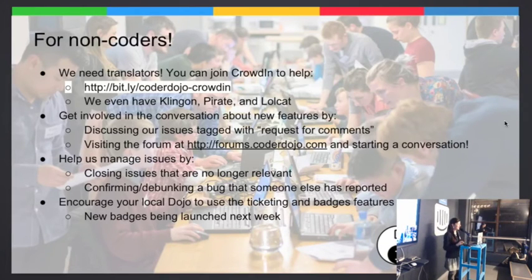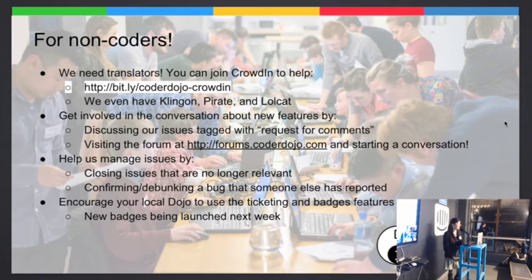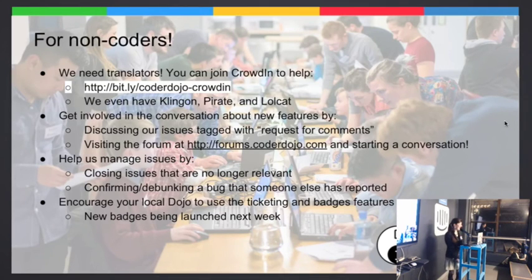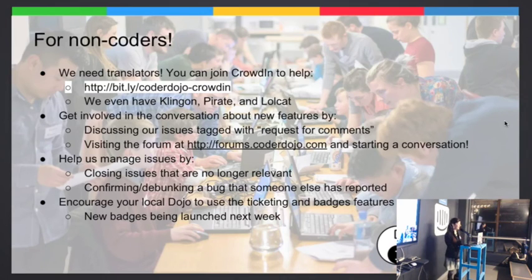You don't have to be a coder to help out. Like I was mentioning with Crowdin, you can help to translate — we still have quite a few languages to go. We only just got started in Irish this week, so we could definitely do with some help there. We also have Klingon, pirate, and lolcat — it would just be funny for the kids. You can also get involved in the conversation on GitHub — there's an issue label called 'request for comments' for issues where I'm not really sure if we want to do them yet or I'd like a second opinion. You can get involved by visiting the forum and starting a conversation, help manage issues by closing ones that are no longer relevant or confirming if something is a bug, and encourage your local dojo to use the events and badges features.